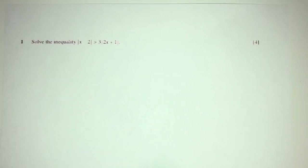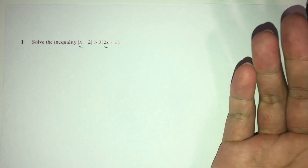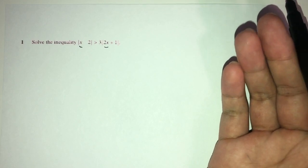So, now we have question number 1. Here we have to solve the inequality. As you can see, we have modulus, but we have x on both sides. So, when you have x on both sides, we have to square both sides.